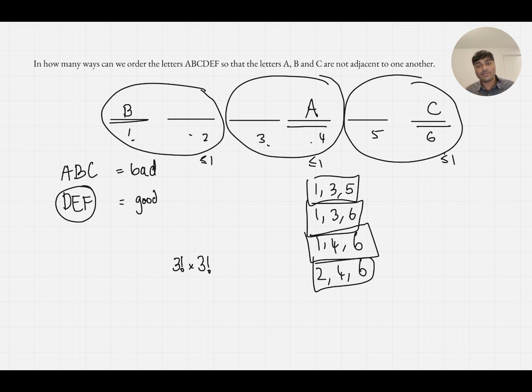So for each of these kind of boxes, I have three factorial times three factorial arrangements of these six letters, the three bad and the three good. And so therefore in total my answer is going to be three factorial times three factorial times one, two, three, four.